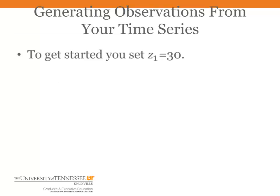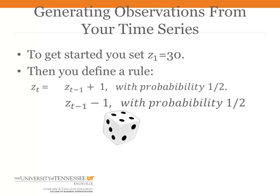To get started, let's set Z1 equal to 30. Z1 is deterministic for this particular time series. Then, each week after week 1, let Z sub T be one more or one less than the previous week. The probability of each of these outcomes will be one half. We will generate these outcomes by flipping a coin or rolling a die. For example, week 2 will have an outcome of Z2 equal 29 or Z2 equal 31. Then this will become the starting point for week 3.